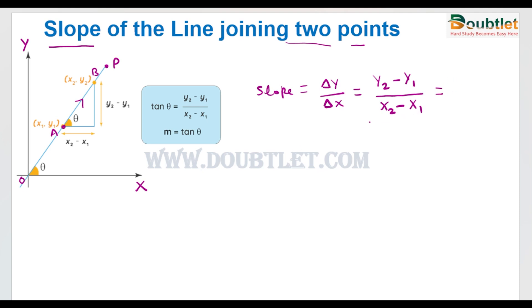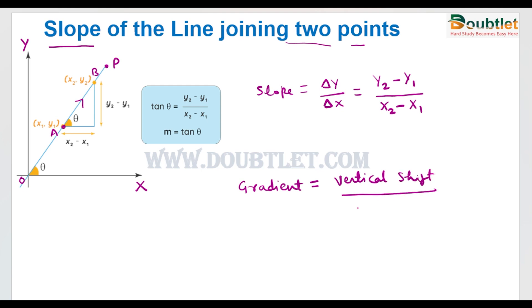We can also name the slope as gradient. We can write this as vertical shift divided by horizontal shift. We can also write this as dy by dx, which we will study in calculus. So this is the slope.